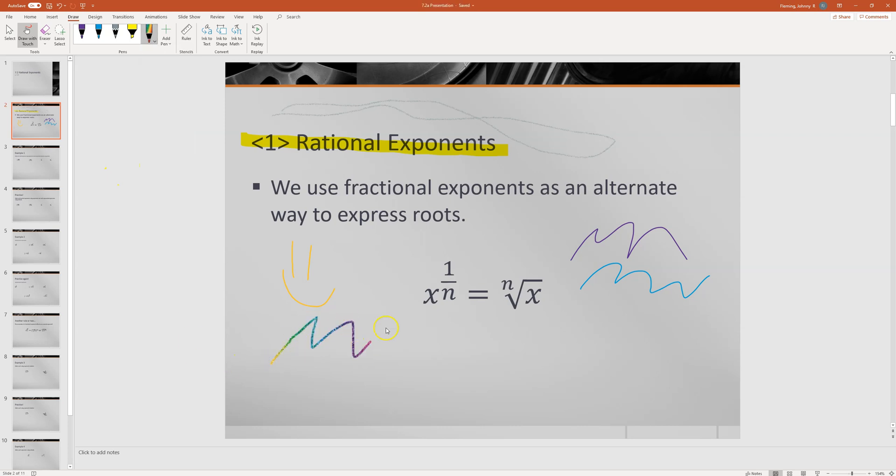you want to draw in rainbow glitter, you can draw in rainbow glitter. If you want to erase, obviously here's your eraser. You can change it to what they call the "stroke eraser," which sounds terrible but basically it means that I drew this whole thing at one time, so if I have it set on that and I just